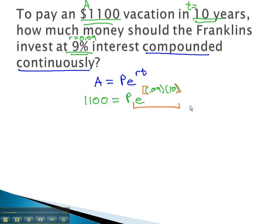As we evaluate the e, we'll use several decimals to ensure accuracy with these exponential equations. e to the .09 times 10 is 2.45960311 times our principle.